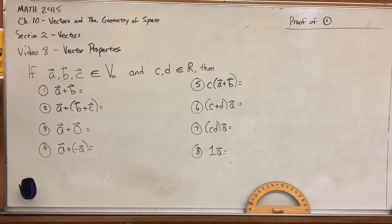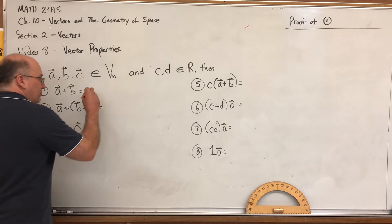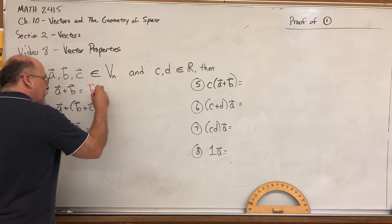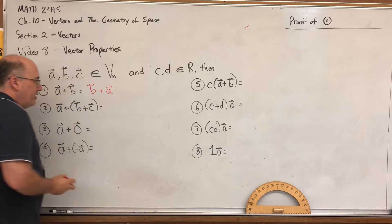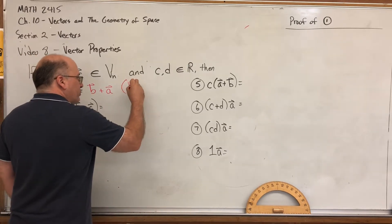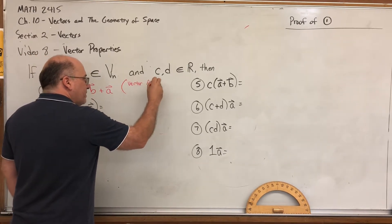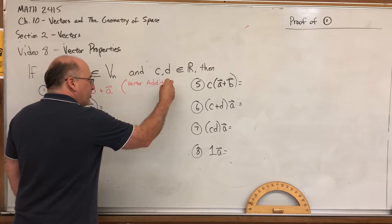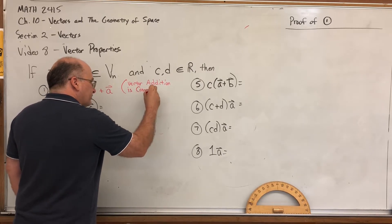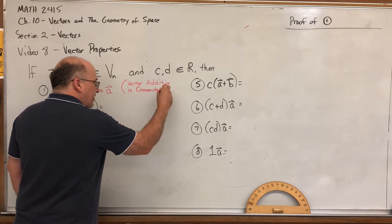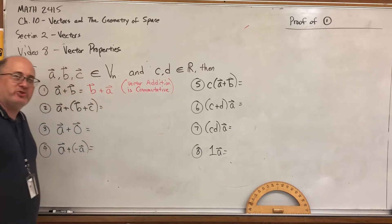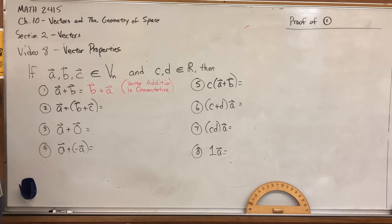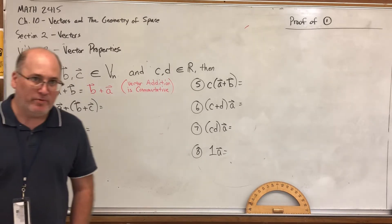If you add vectors, then there's eight properties we're going to list, and a lot of these are going to make so much sense, it's not even funny. Property one: If you add vector A plus B, it's equal to the sum of B plus A. In other words, this is saying that vector addition is commutative. The commutative property says that the order that you add things in is irrelevant. A plus B equals B plus A. And we take that for granted with real numbers.